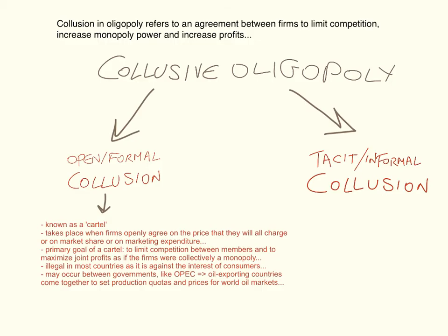Collusion in oligopoly refers to an agreement between firms to limit competition, increase monopoly power, and increase profits.